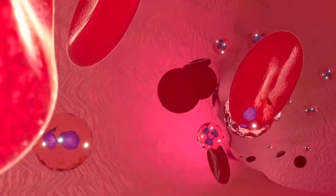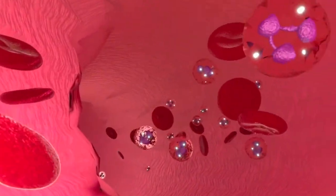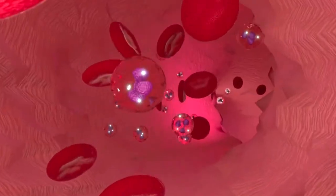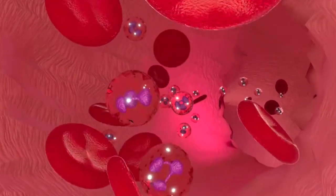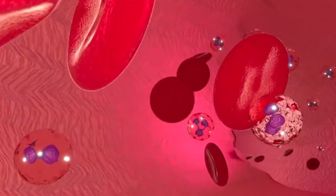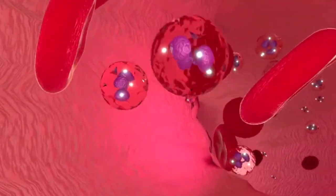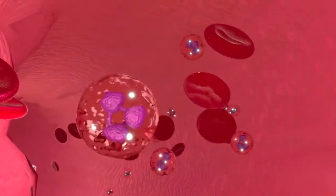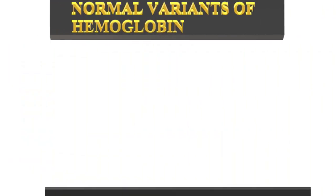Hemoglobin is an iron-containing metalloprotein in red blood cells that carries oxygen to organs and tissue and transports carbon dioxide from organs and tissue back to lungs. Hemoglobin is an assembly of four globular protein subunits tightly associated with a non-protein prosthetic iron-containing heme group.